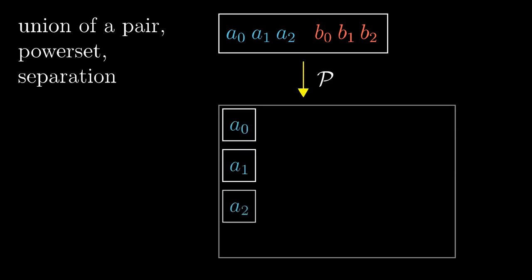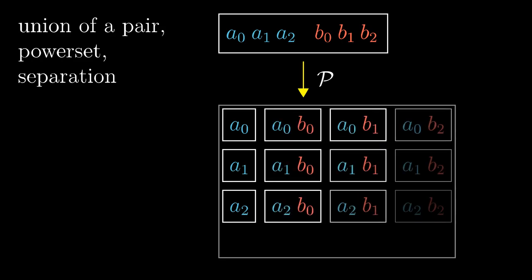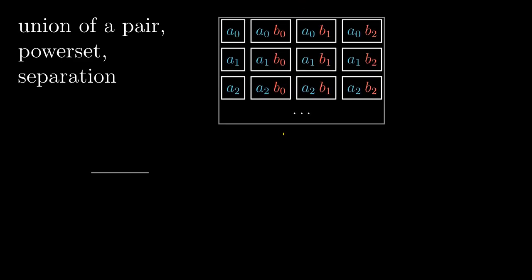There are all the singleton sets containing elements of A, also all the two element sets containing one element from A and the other one from B, and there are plenty of other irrelevant elements. Now let's take a power set again.